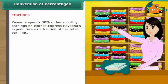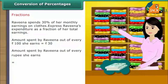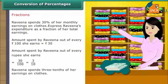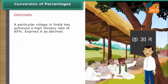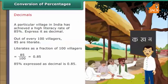Fractions: Raveena spends 30% of her monthly earnings on clothes. Amount spent out of every Rs. 100 she earns is Rs. 30. Amount spent per rupee she earns = 30/100 = 3/10. Raveena spends 3 tenths of her earnings on clothes. Decimals: A village in India has achieved a literacy rate of 85%. Literates as a fraction = 85/100 = 0.85. 85% expressed as a decimal is 0.85.